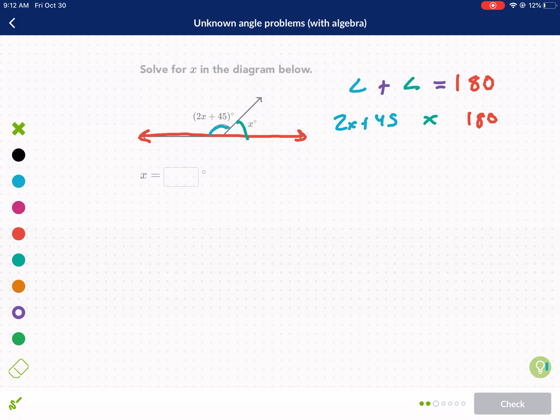I'm going to combine my terms. I get 3X plus 45 equals 180. That's going to be 135 equals, after I subtract 45 from both sides, equals 3X. 135 divided by 3, I get 45. So I divide by 3. I get X equals 45 degrees. This time you can put X equals 45 degrees because that's one of the labeled angles.